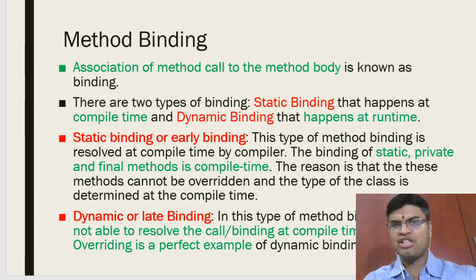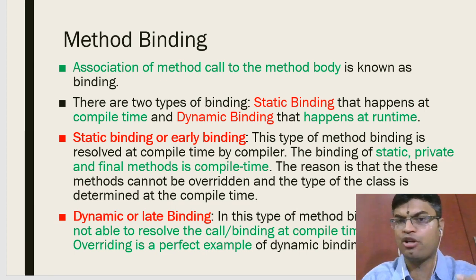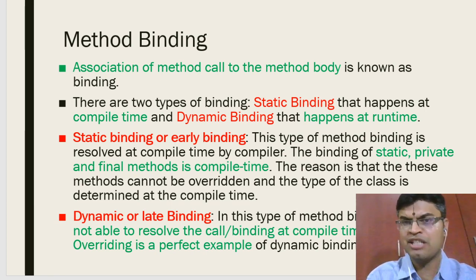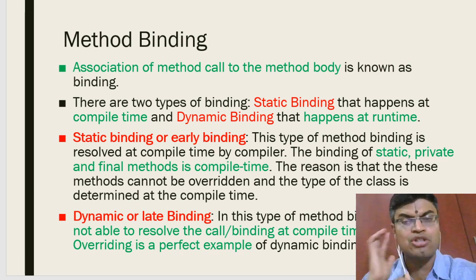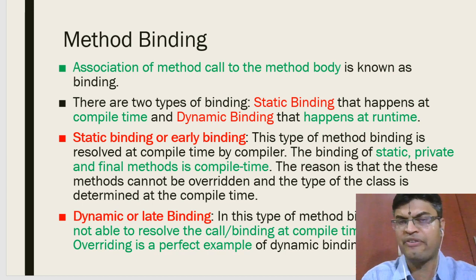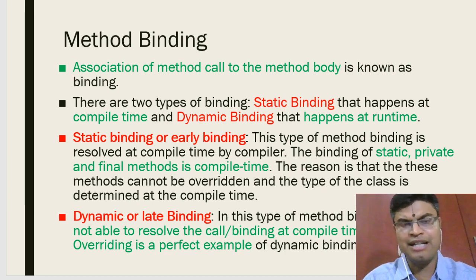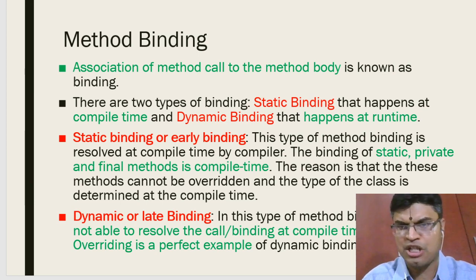Functions declared as static, private, or final will not behave differently once you start running. That is why you can do the binding for these functions at compile time itself. Static binding works for functions defined as static, private, or final.